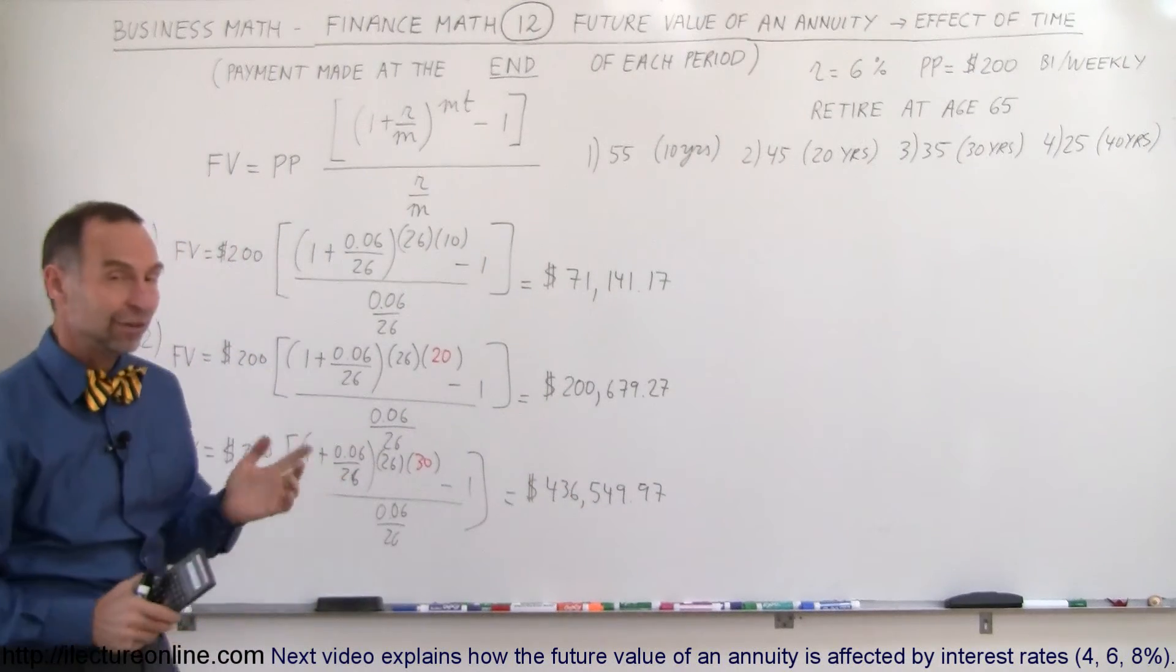How much money would the person have in their retirement account if that started at age 35? We'll do this thing again. 0.06 divided by 26 plus 1. Raise that to the 26 times 30 power. Subtract 1 from that. Divide by this fraction, which is the same as multiply times the inverse, so times 26 divided by 0.06. Multiply times 200. That person would have $436,549.97. So, add another 10 years, and the amount of money in the account when you retire would be more than double if you'd only done it for 20 years versus having done it for 30 years.